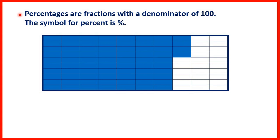Percentages are fractions with a denominator of 100. The symbol for percent is %. Here we have a fraction bar split into 100 pieces, and we have 74 of those pieces shaded.